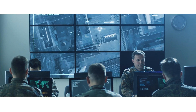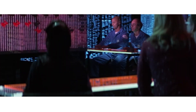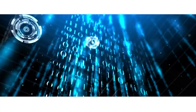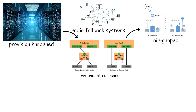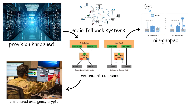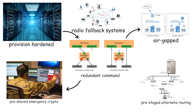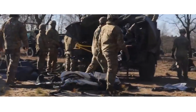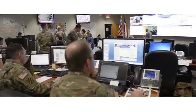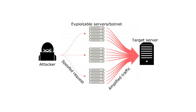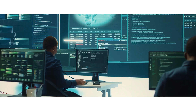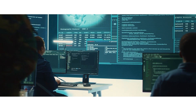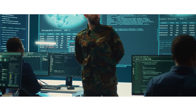Indicators include simultaneous outage reports from frontline units, loss of encrypted channels for short intervals, and disrupted telemetry from logistics hubs. Defenders must provision hardened, redundant command and control pathways, air-gapped or radio fallback systems, pre-shared emergency crypto, and pre-staged alternate routing. Rapid verification procedures and offline SOPs for commanders are essential to avoid paralysis. For attackers, the cost is higher than generic DDoS because precise timing and targeting increase exposure. For defenders, the required preparation is operational discipline and redundant communications architectures.